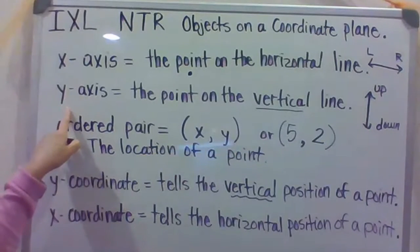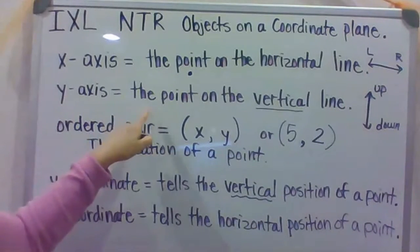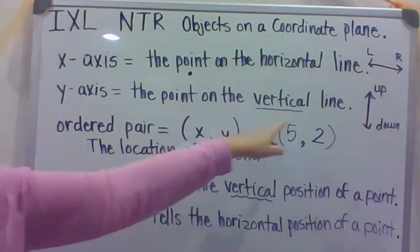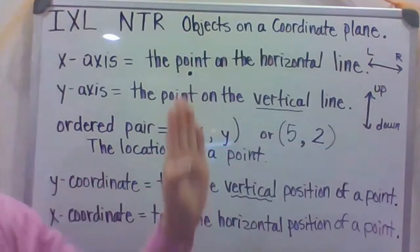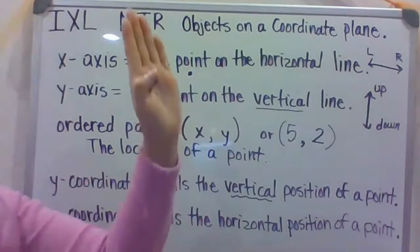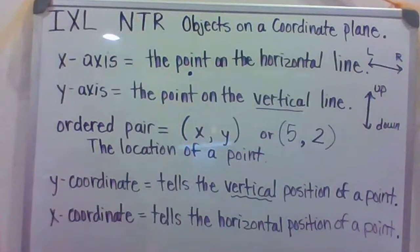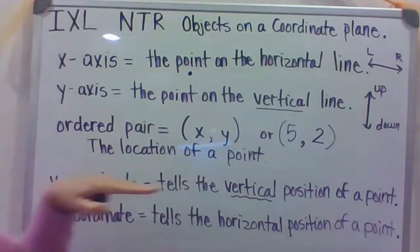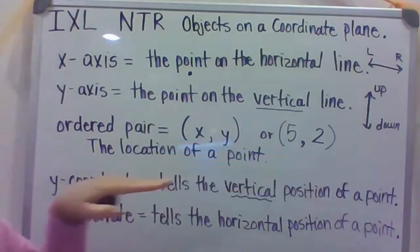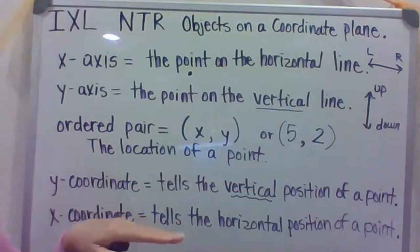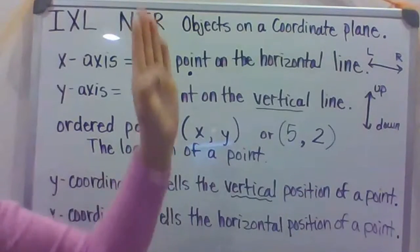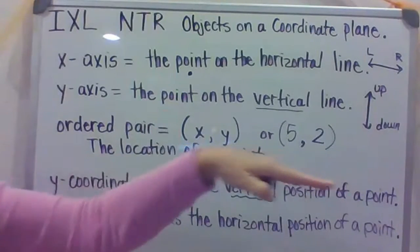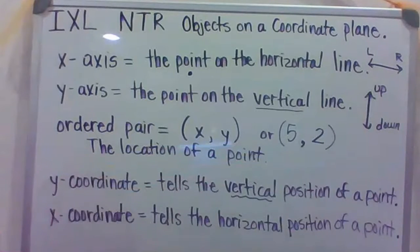They're going to ask you questions about the Y-axis as well. So a Y-axis is where you would find the point on the vertical line, so again, going up and down. Anything up and down is vertical, and that's the Y-axis, and going horizontally is the X-axis. So again, the Y-axis is vertical up and down. The X-axis is horizontal, left and right.